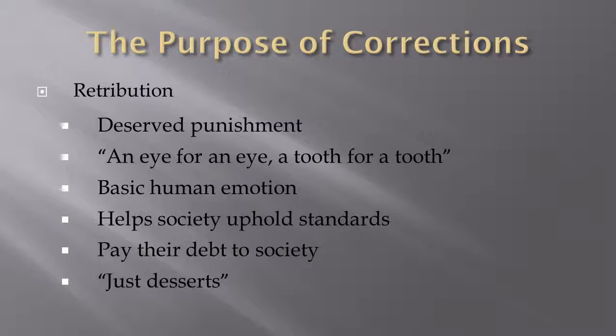Now I want to talk about the purpose of corrections at its core. Retribution still has a strong place in American society. Society establishes what is inappropriate behavior — many crimes we can all agree are of significant nature — but there are also many laws put into place to have folks avoid certain behaviors deemed inappropriate, which may not rise to the level of murder, rape, or kidnapping, but still create a challenge for good public order.